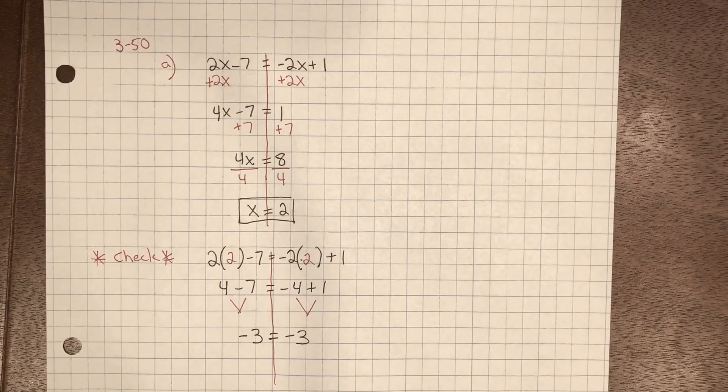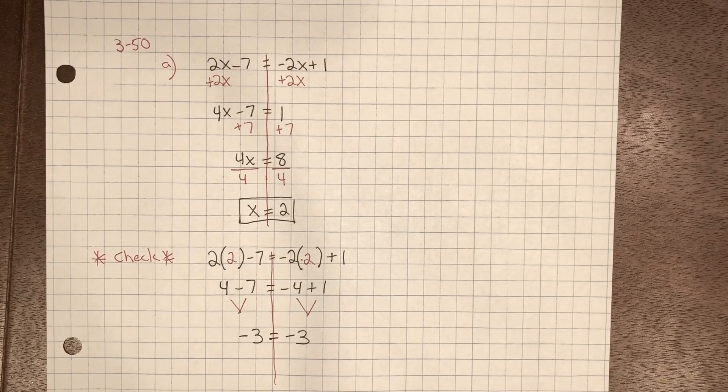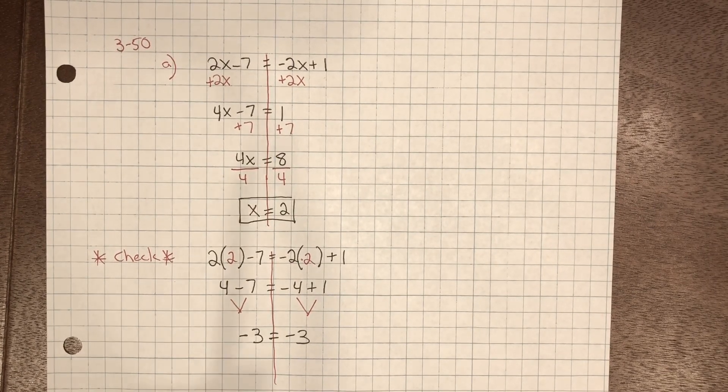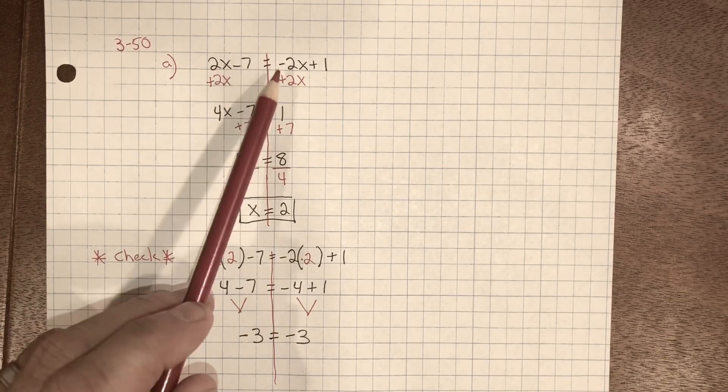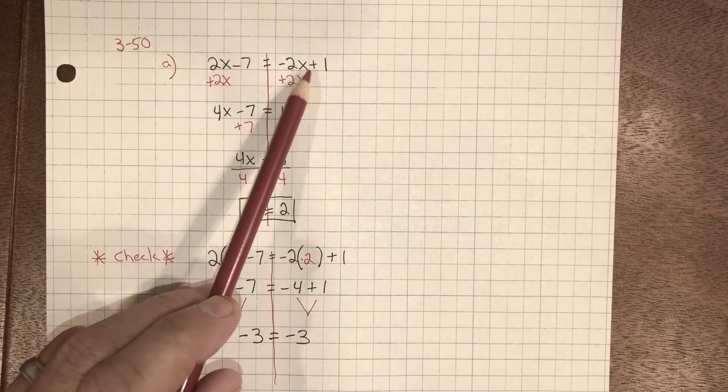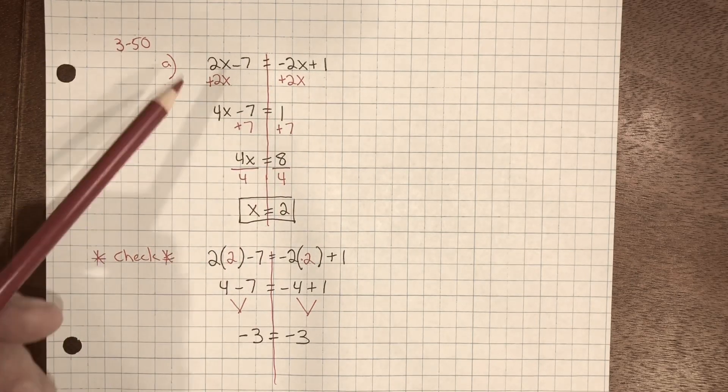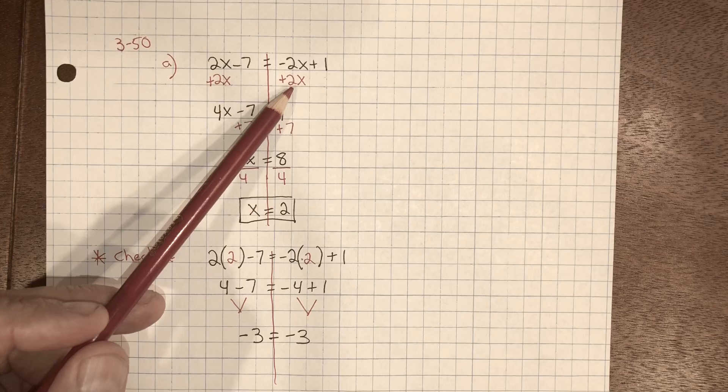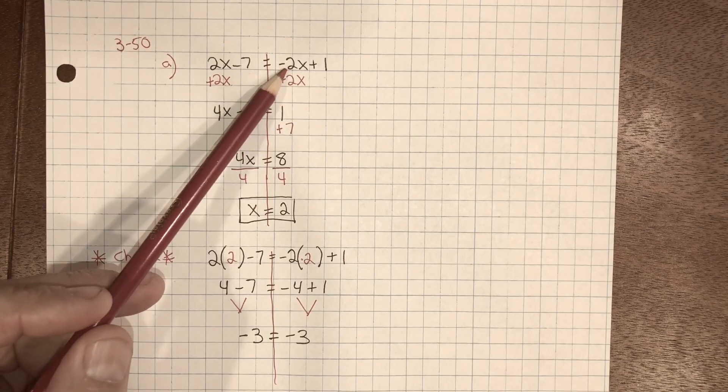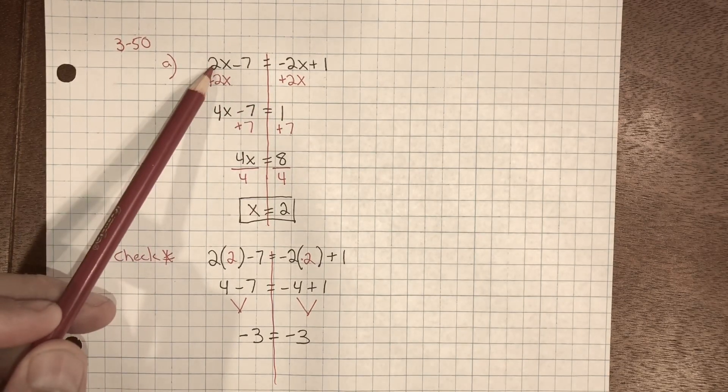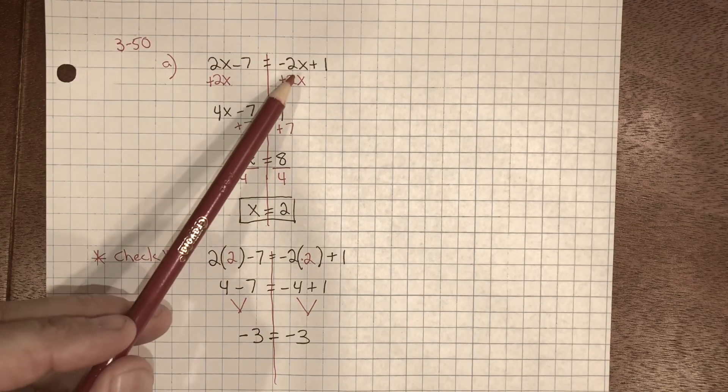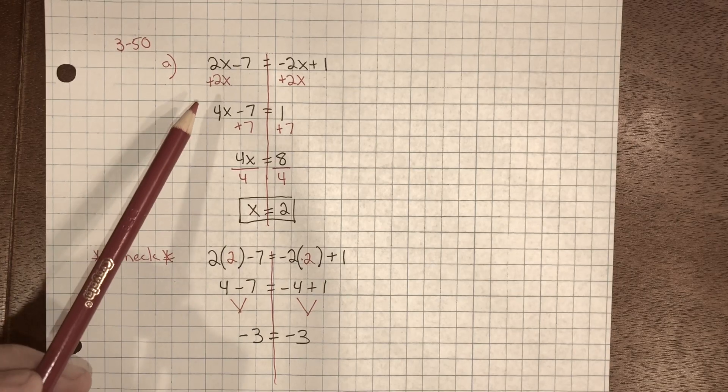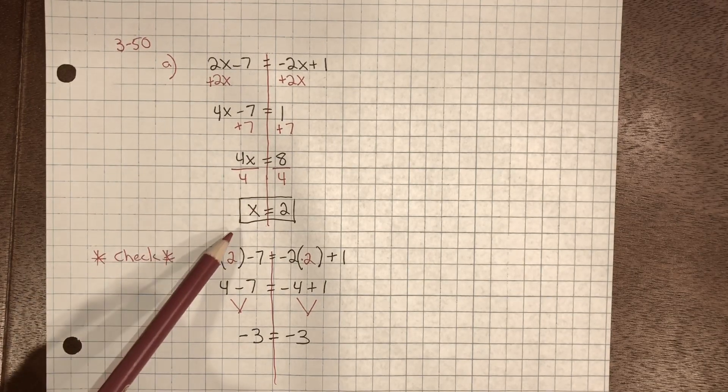On problem 3-50, you have an equation that you need to simplify and solve for the variable. We have 2x minus 7 equals negative 2x plus 1. We want to get the variable to the side that has more. We have 2 negative x's and 2 positives. So I'm going to bring the x's to the left side. This will keep us from having to divide by a negative at the end.